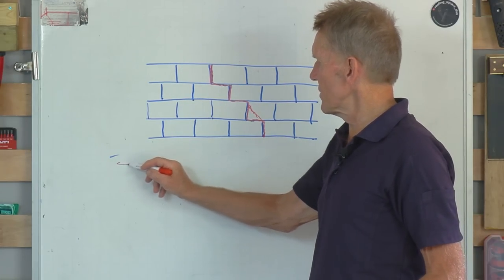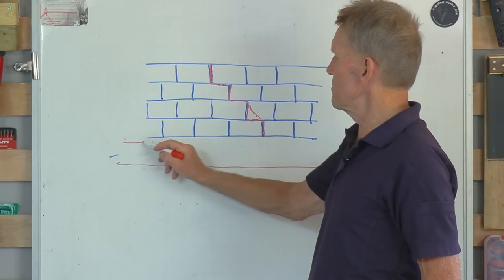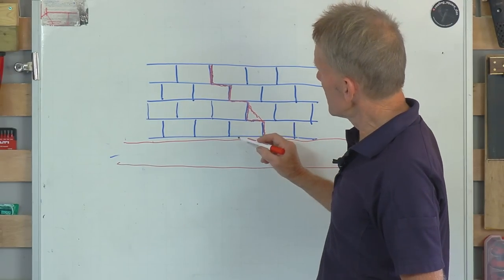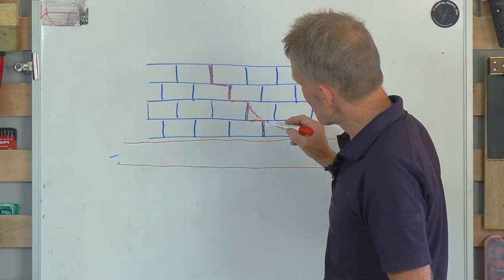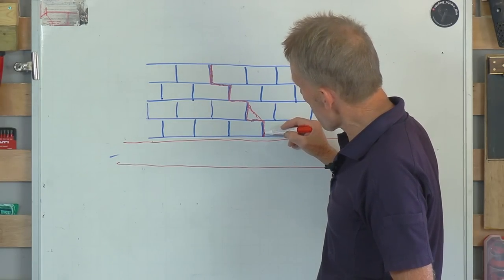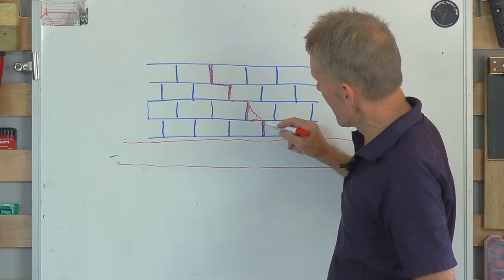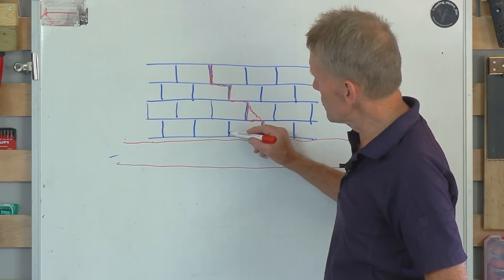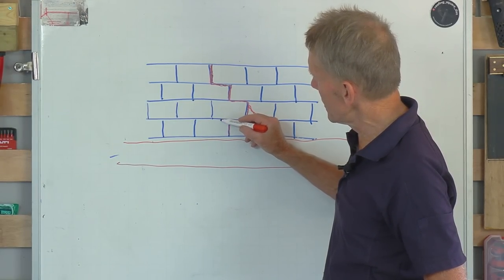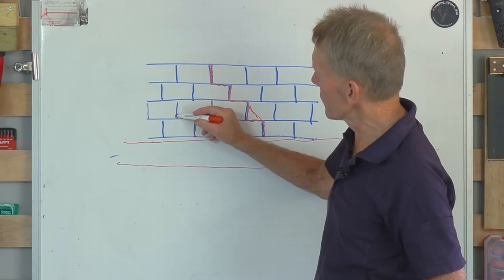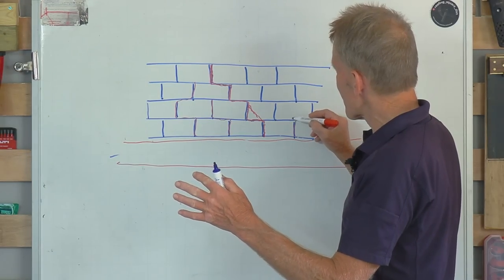But what you find with the sand and lime mortar is it's very forgiving and if it cracks it's going to follow the line of the mortar. But if you've got a foundation down here moving around, you may not even notice the cracks because instead of just having one major crack, say a 10 millimeter crack along this line, you may have a 2 millimeter crack along that mortar line, 2 millimeter crack along that mortar line, it's kind of spreading it out.